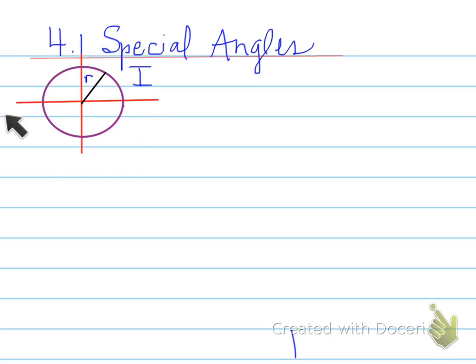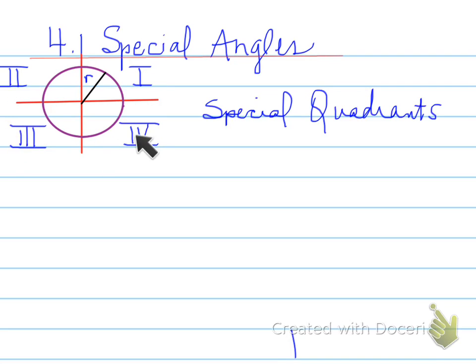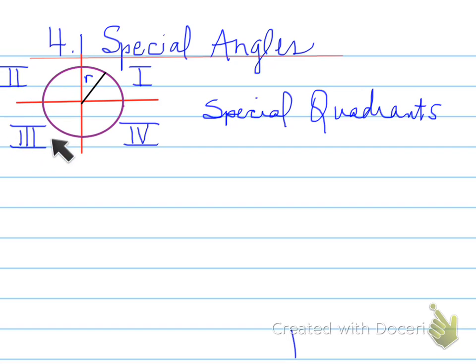Now, when we label the quadrants, we always label them on the Cartesian plane in the pattern of a C. These are special quadrants numbered 1, 2, 3, and 4 in Roman numerals, and it always starts in this corner in the label of a C to represent the Cartesian plane.